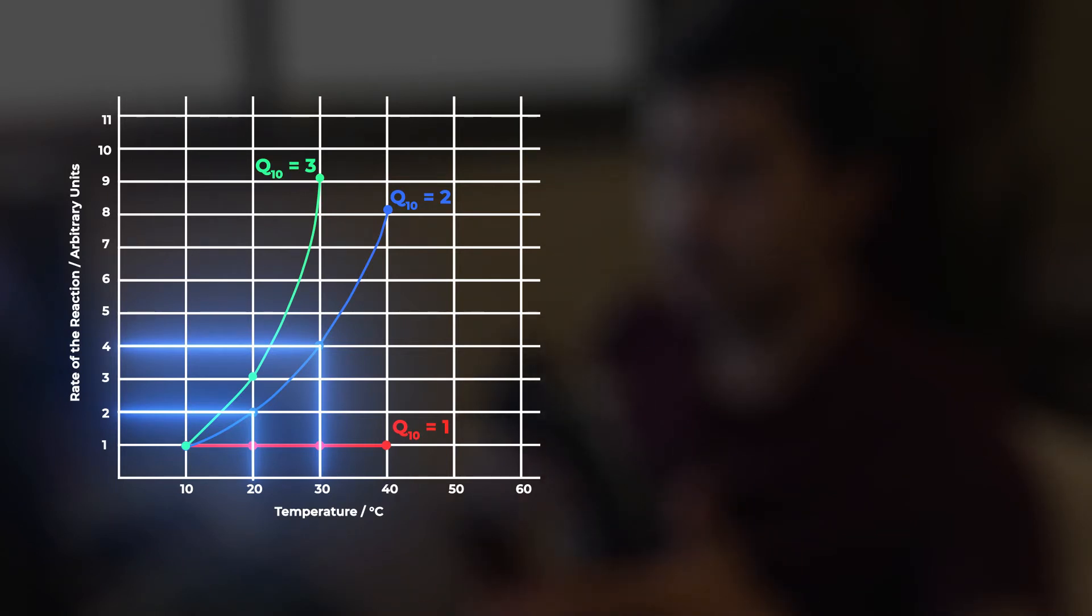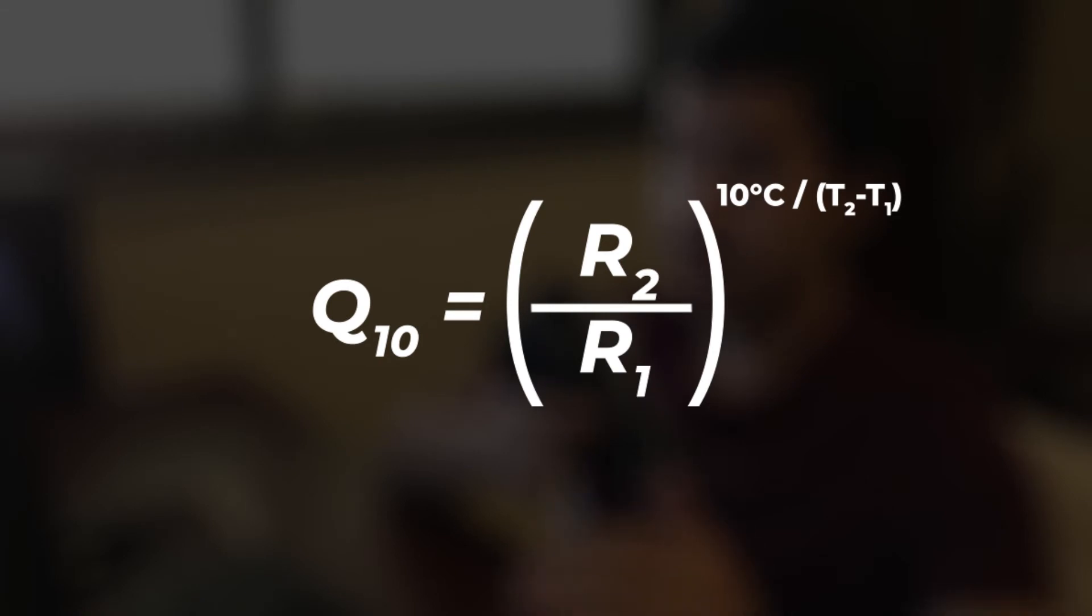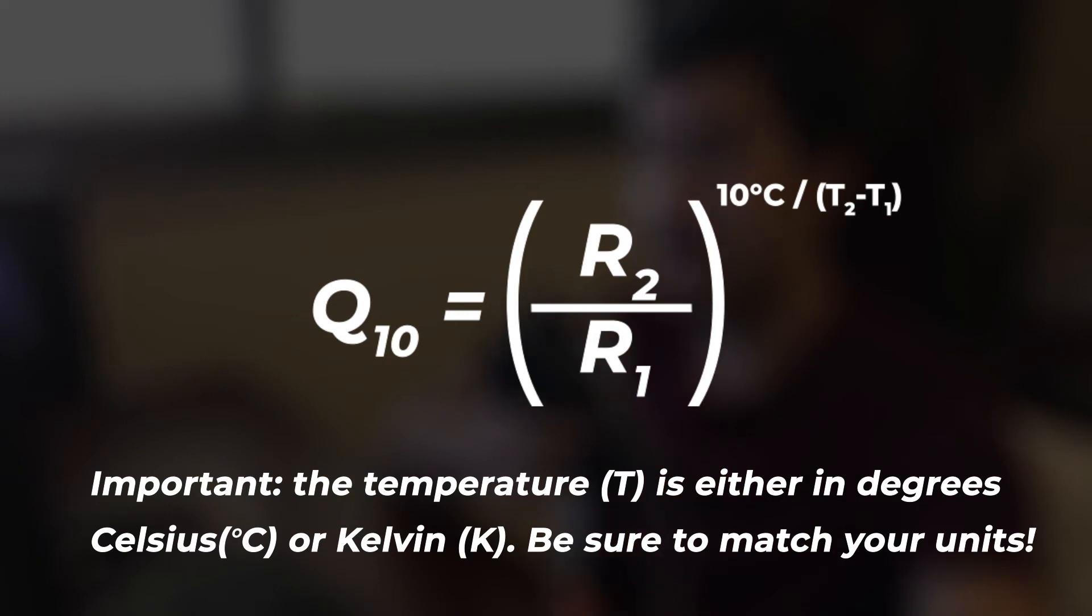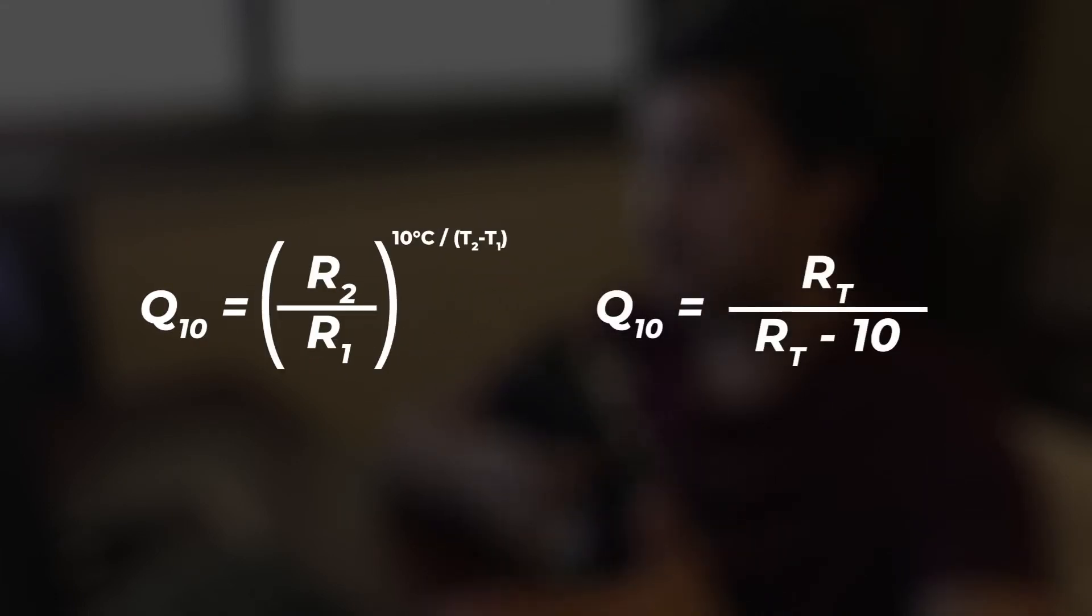This procedure can be repeated for any two points on the graph. The Q10 can also be written as the second rate divided by the first rate, the entire thing raised to the power of 10 degrees Celsius divided by the difference between the temperature of the second rate and the temperature of the first rate. Regardless of which equation you use, you will still get the same Q10 values. Just use whichever one you find most convenient.